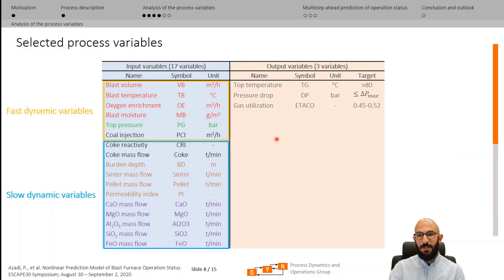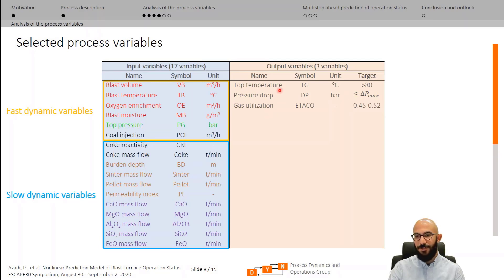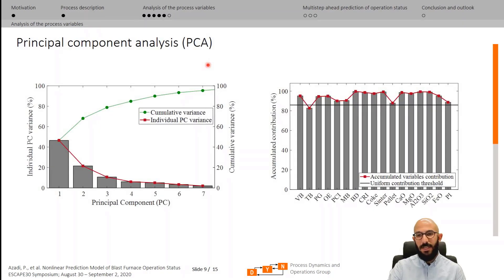Putting all variables together, we come up with 17 exogenous input variables and 3 output variables. The input variables are categorized into fast and slow dynamic variables — fast dynamic variables concern the gas phase, and slow dynamic ones relate to the solid phase. The output variables are top temperature, pressure drop, and gas utilization, each with acceptable ranges of validity. The top temperature should be kept above 80 degrees Celsius, the pressure drop should not exceed its maximum threshold based on blast furnace geometry, and the gas utilization factor should be kept between 0.45 and 0.52. Principal component analysis was carried out, showing that seven principal components incorporate 95% of the variations among input variables.